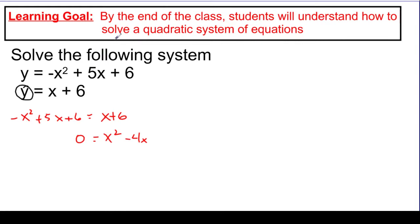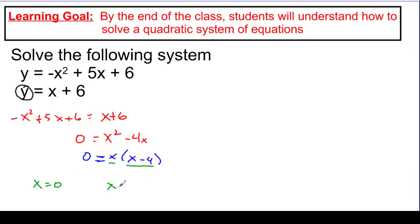Now I need to solve x squared minus 4x equals 0. This has a GCF of x, so it factors as x times (x minus 4) equals 0. If the product of factors equals 0, then either factor must be 0. So either x equals 0, or x minus 4 equals 0, giving x equals 4. I'm going to get two x values out of this.